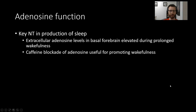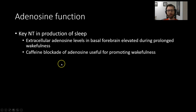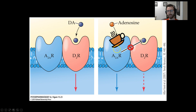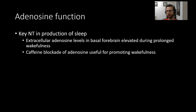So let's put that all together. Adenosine is a key neurotransmitter in the production of sleep. Adenosine levels in the basal forebrain are elevated during prolonged wakefulness — as we're awake longer, we see more adenosine accumulating. Caffeine blocks adenosine, so it's useful for promoting wakefulness. Through this mechanism, when adenosine normally promotes the dampening of dopamine effects that promote arousal, removing that from the system removes the brakes and allows arousal to continue at full strength. That is the nuts and bolts of how caffeine interacts with our adenosine system to promote wakefulness. That's it for our unit on nicotine and caffeine. See you next time.